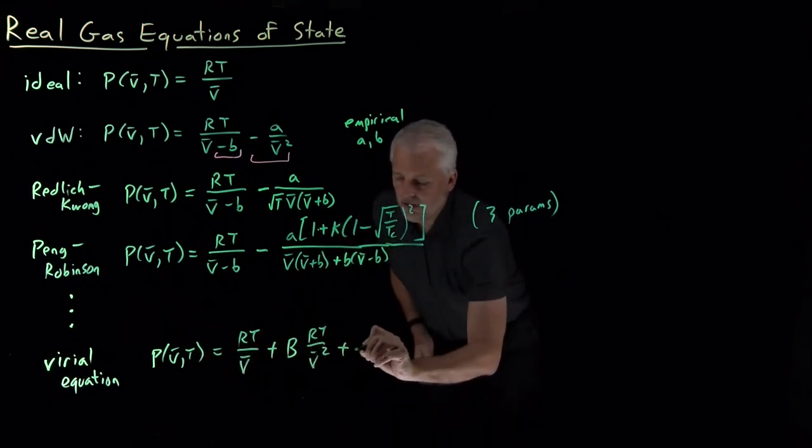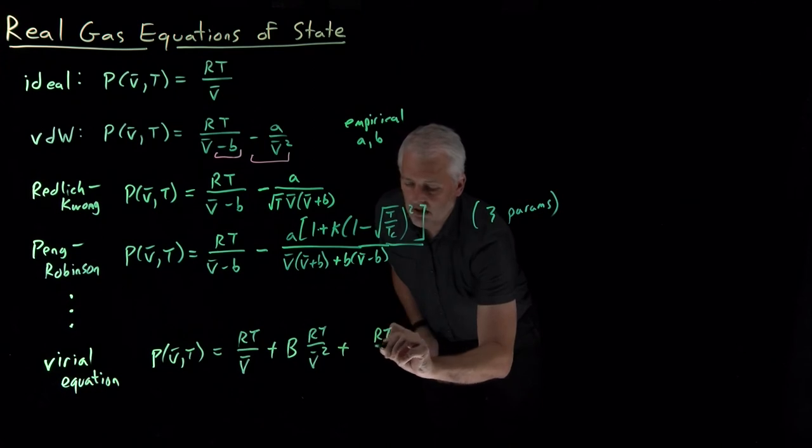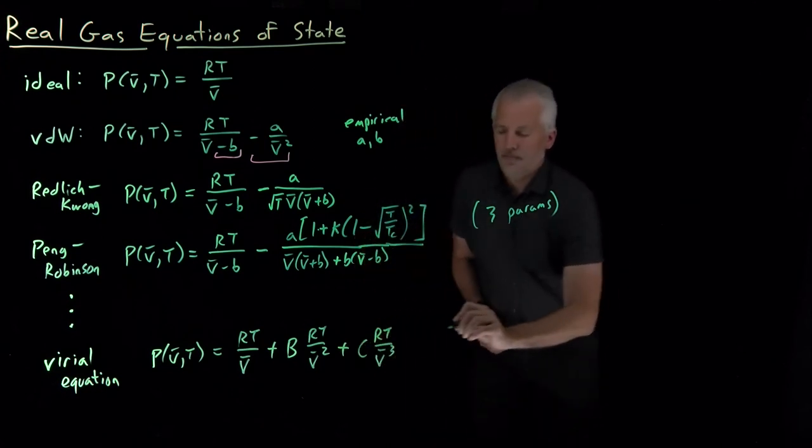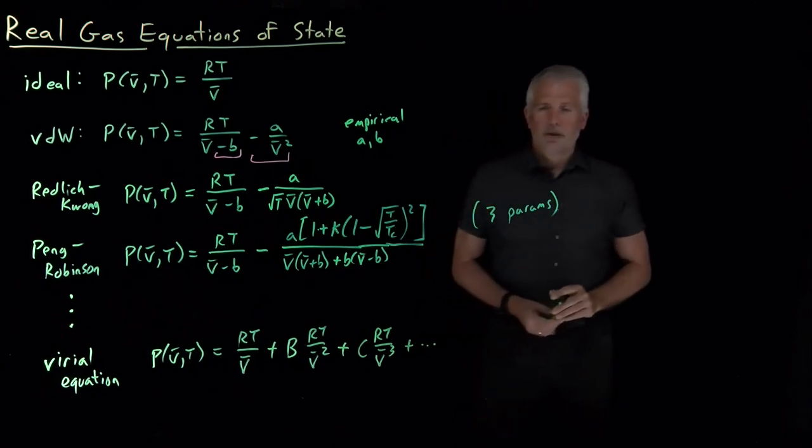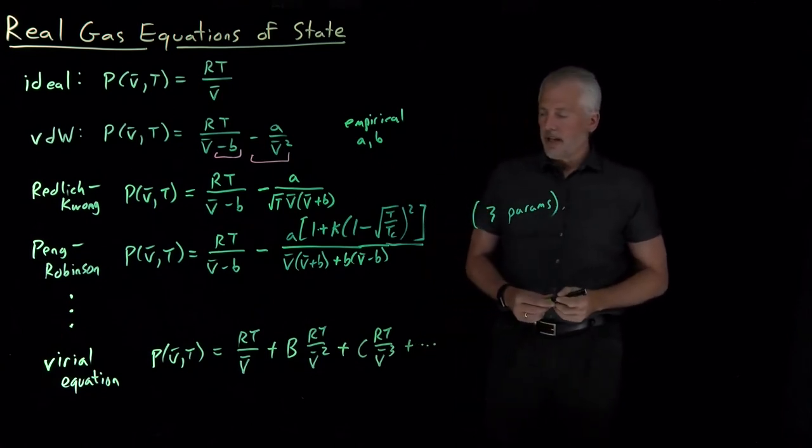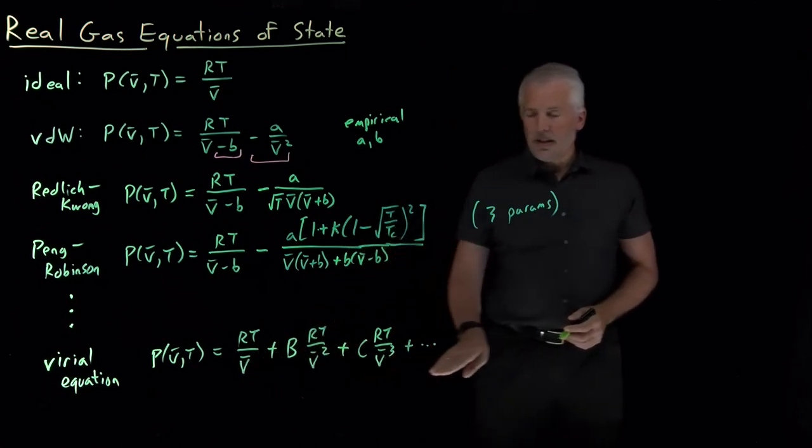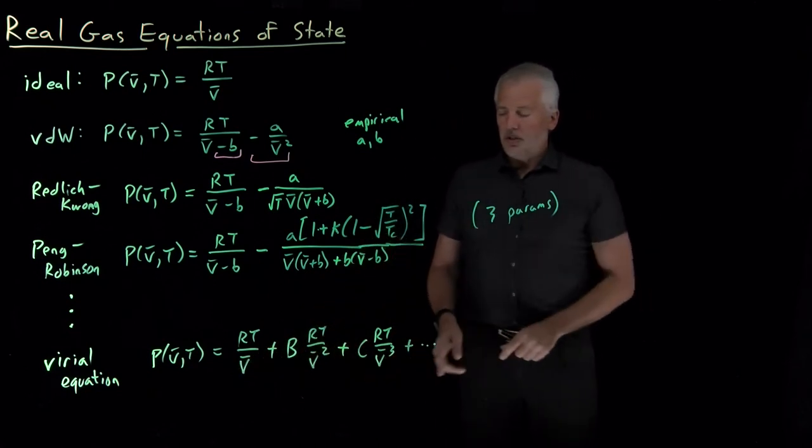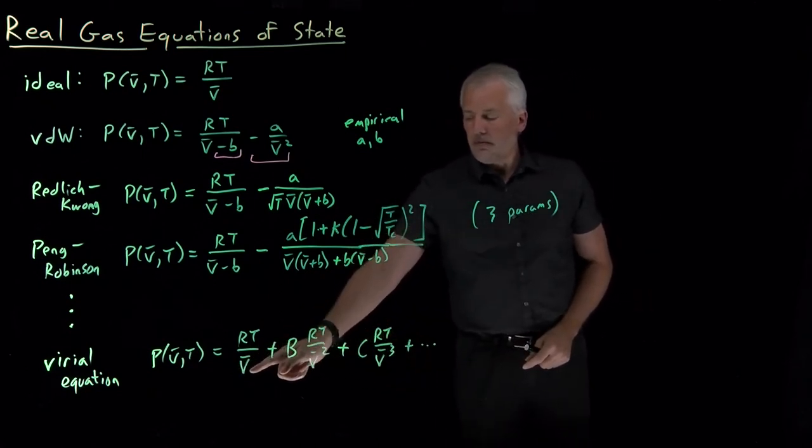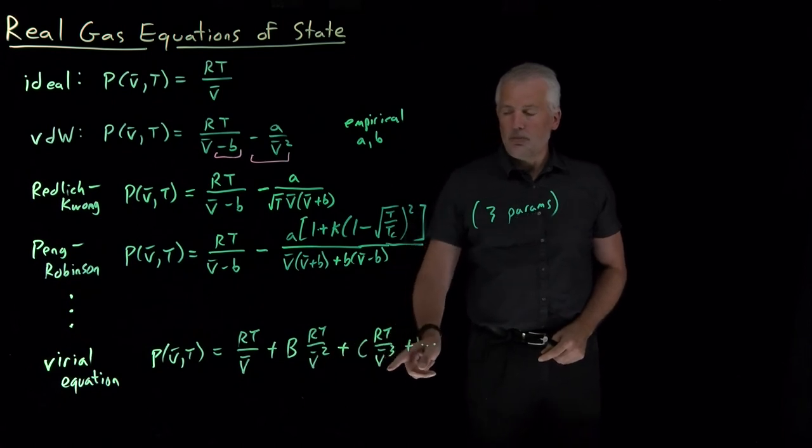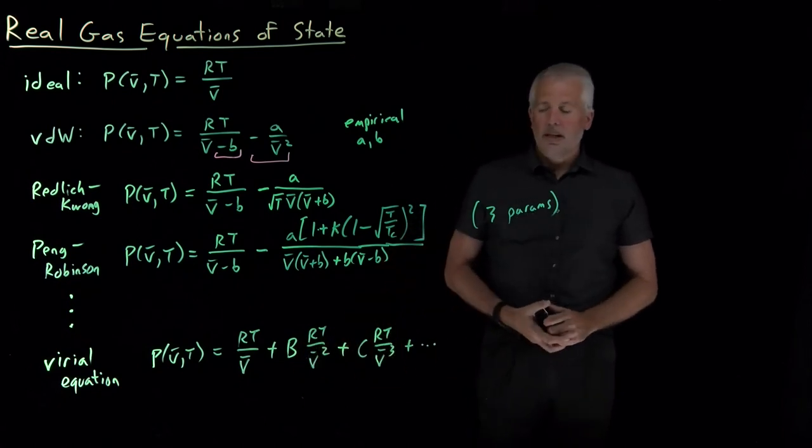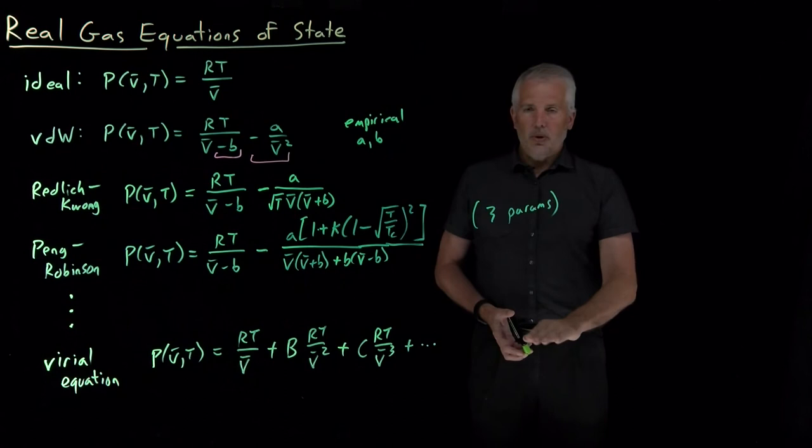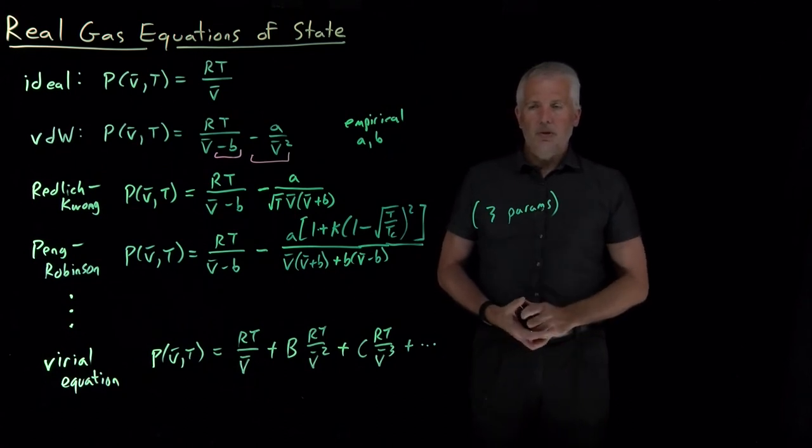And if that's not good enough, we can include a V-bar cubed term, and then a V-bar to the fourth term, and a V-bar to the fifth term, as many of these as we need. So we've written down, essentially, an infinite series, keep including correction terms of the order V, V-squared, V-cubed, in the denominator, and that eventually, we'll get to a point where the corrections are so small that we don't need to include them anymore.